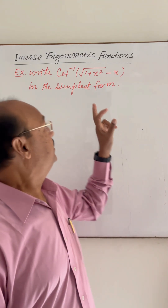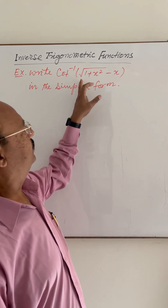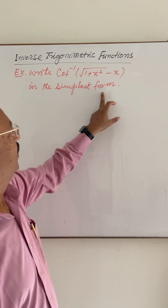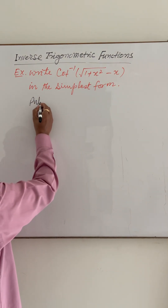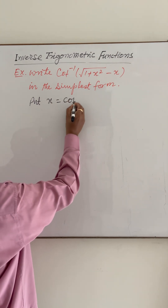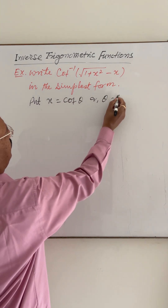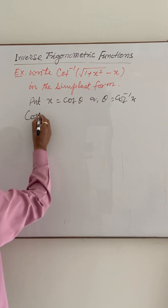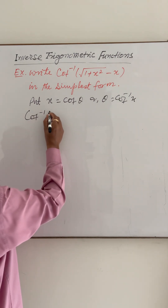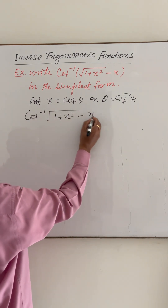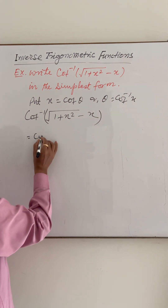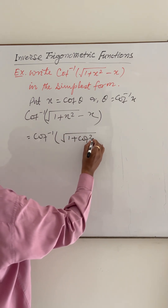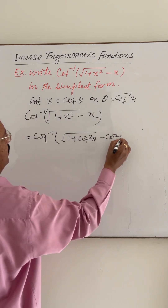The question is: write cot inverse of root over (1 plus x squared) minus x in the simplest form. Here we will put x equal to cot theta, so theta equals cot inverse x. The expression cot inverse of root over (1 plus x squared) minus x becomes cot inverse of root over (1 plus cot squared theta) minus cot theta.